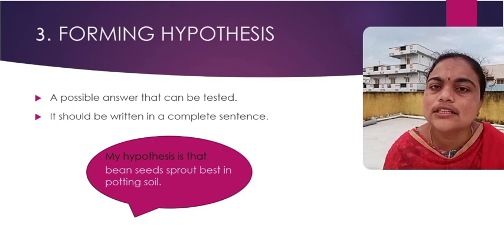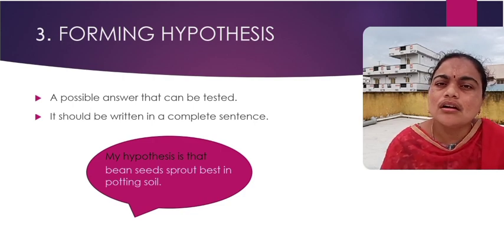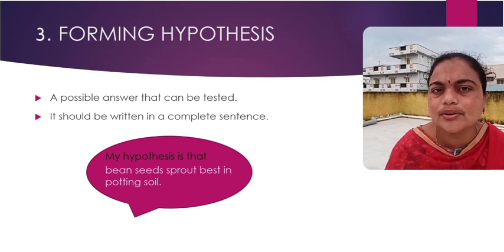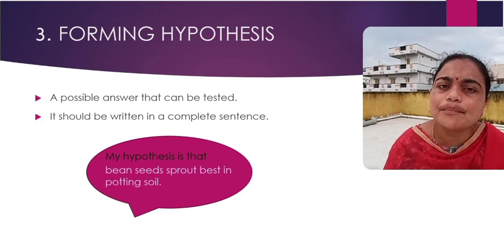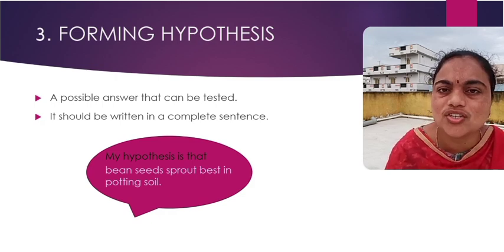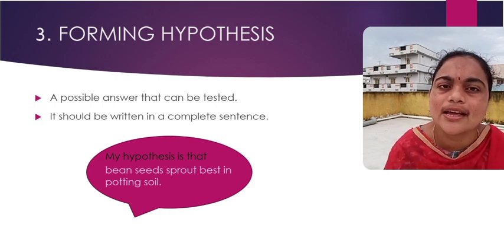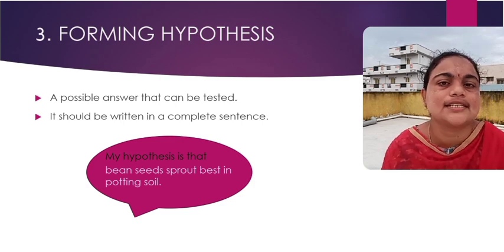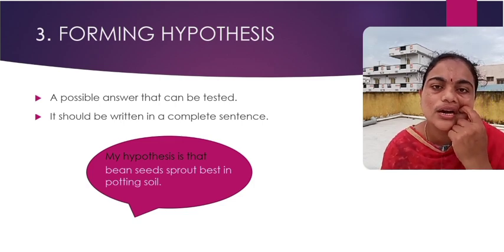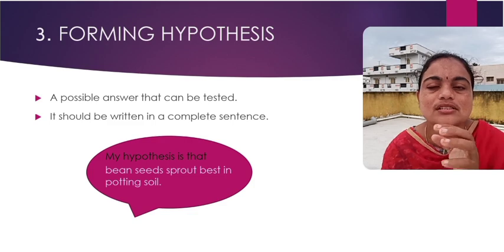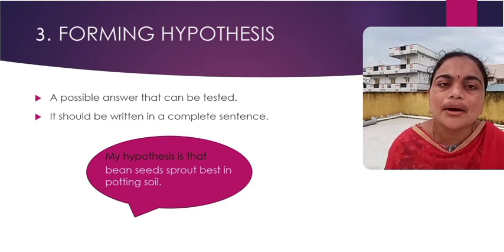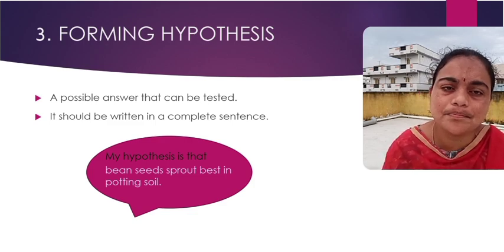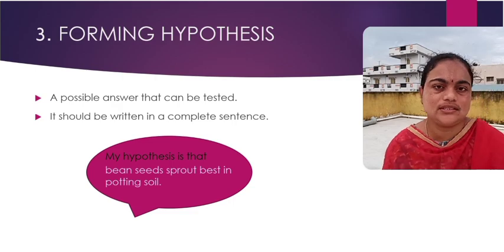The third step is forming a hypothesis. A hypothesis is a possible answer that can be tested, and it should be written in a complete sentence. Our hypothesis is: bean seeds sprout best in potting soil.